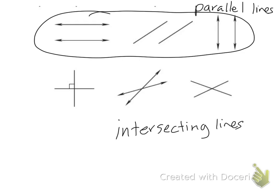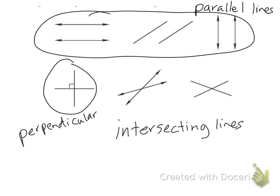Now this pair of intersecting lines has a special name and they are called perpendicular. Perpendicular lines mean that the lines intersect to form square corners. So you see how I can draw squares? Our other two lines don't intersect to form square corners so they're just called intersecting lines, or we call them oblique. They're neither parallel nor perpendicular.